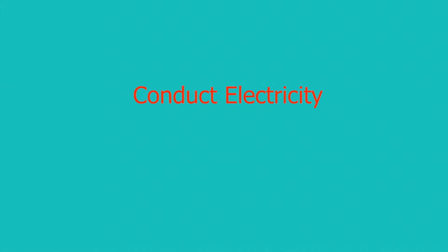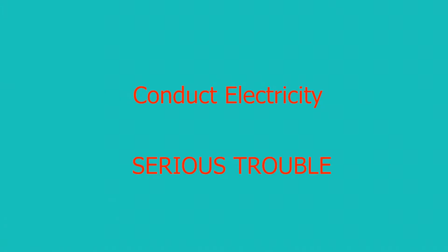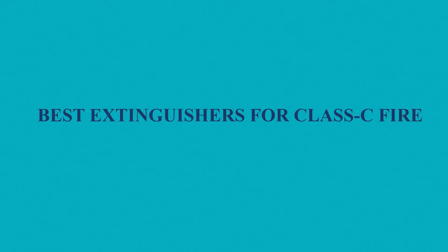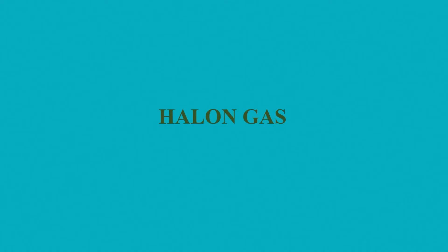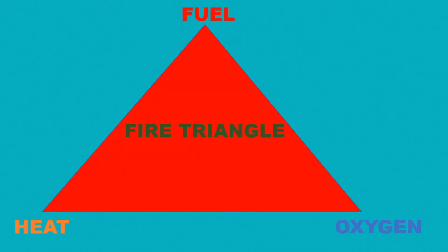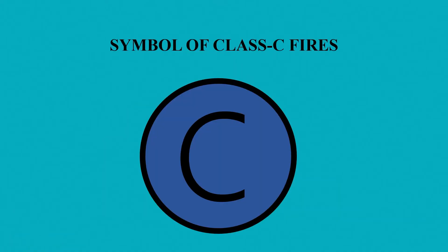Never use water, foam or any solution containing water on electrical fires, as these materials can conduct electricity and can result in serious trouble. The best extinguishers in case of electrical fires are dry chemical powder, CO2 or halon gas. Class C fires are extinguished by taking away the heat element of the fire triangle. These fire extinguishers are denoted by a circle symbol with blue color and capital letter C.